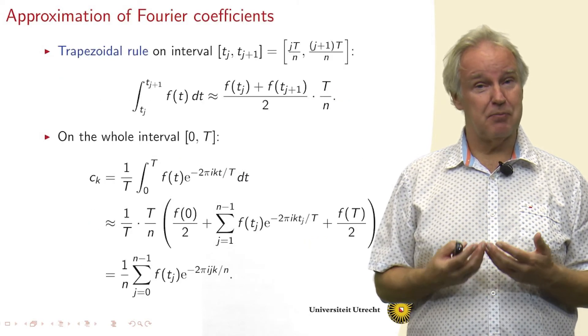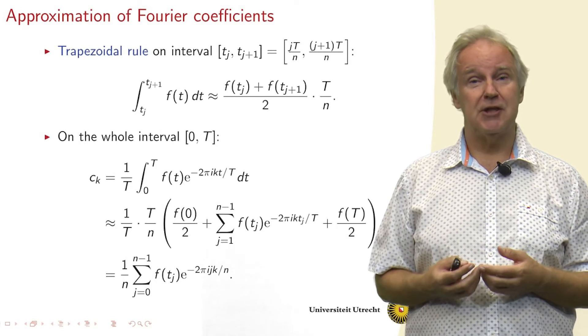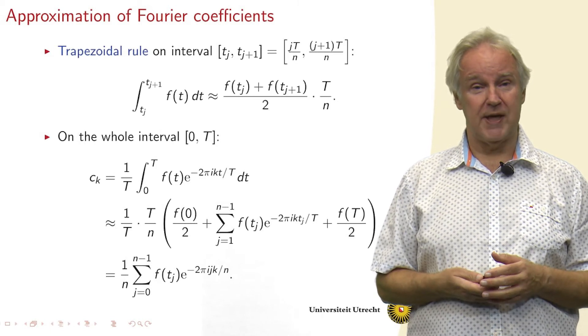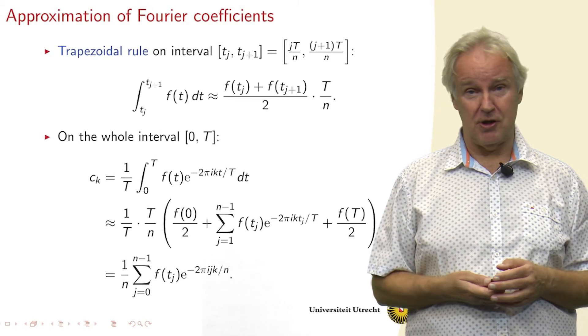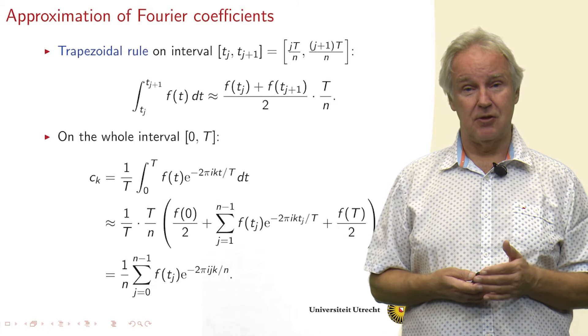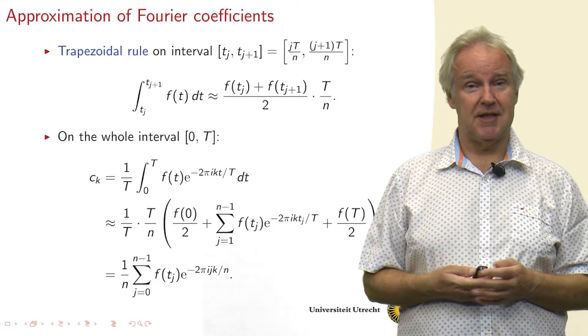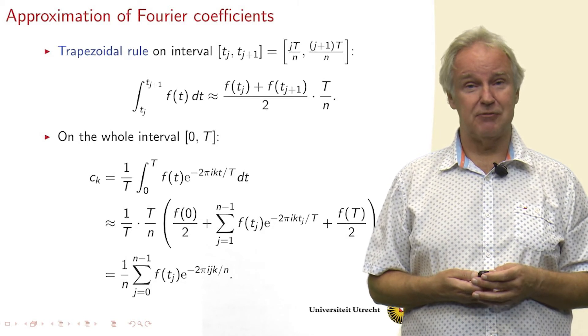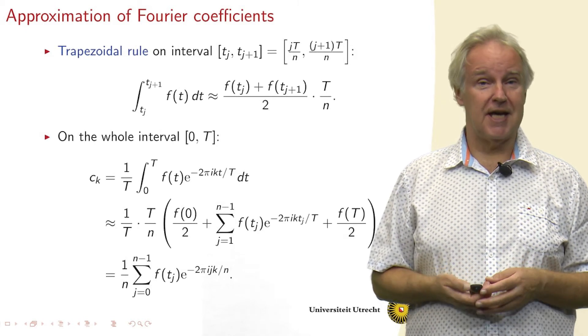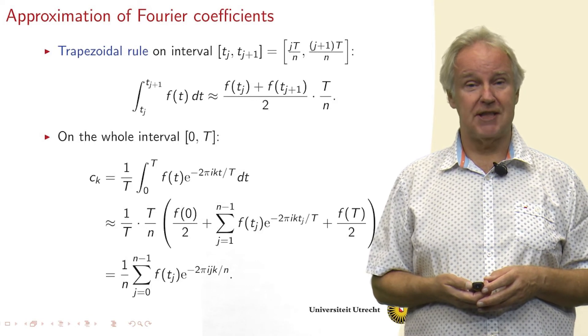If we want to get the approximation of the Fourier coefficients, we need to approximate the integral. And we can do that by using the trapezoidal rule, which basically says take for an interval tj to tj plus 1, take the value at the left side, at the lower end of the interval, at the right side, divide by 2, so we take the average, and you multiply by the length of the interval, which is capital T divided by n.